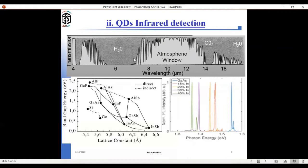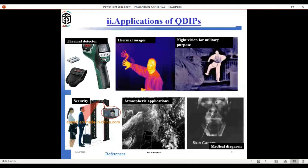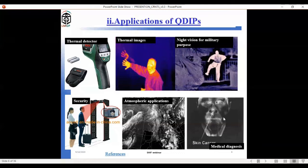Based on the inter-sub-band energy spacing, quantum dots can be used as detectors in the 4–6 micrometer and 8–14 micrometer ranges, where atmospheric transmission is maximum and is not affected by water or CO₂. Indium arsenide quantum dots have applications in IR detection, thermal detectors, night-vision cameras, military and security applications. These QDIPs are not just limited to optoelectronic devices — they are also used in biomedical applications to detect cancer cells and for atmospheric and optical remote sensing.